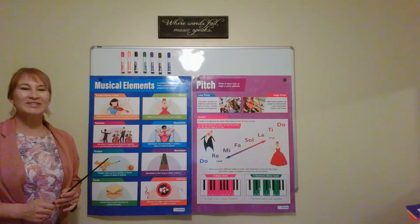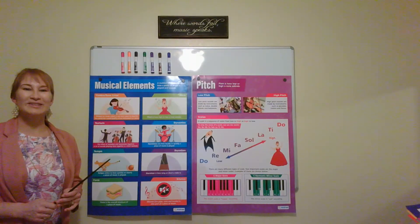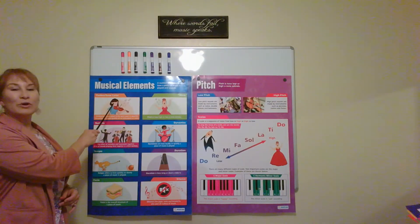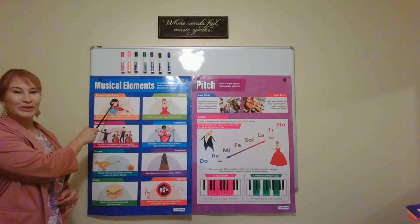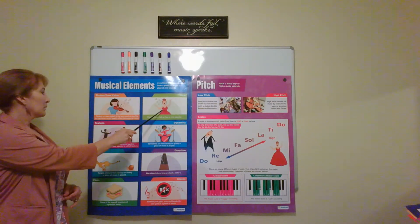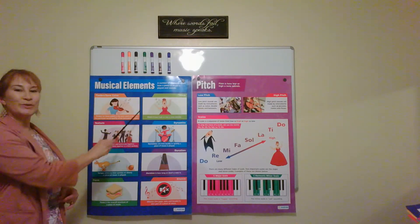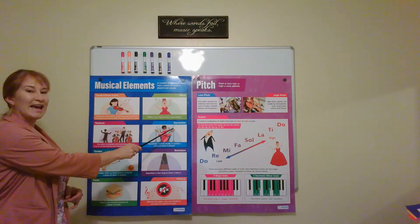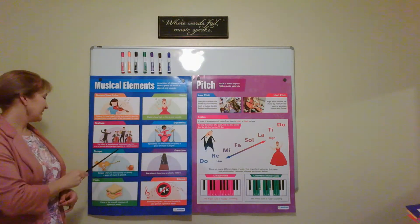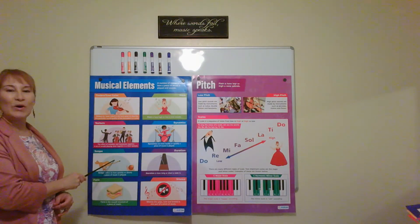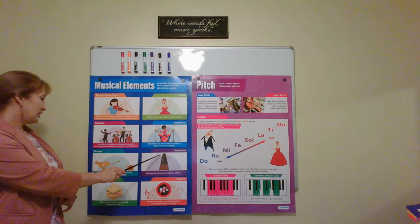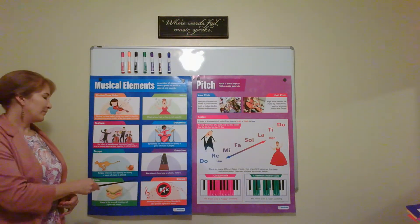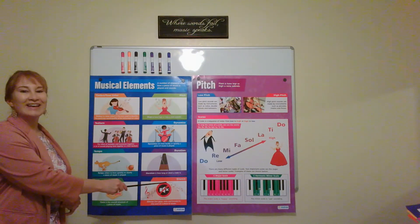The seven elements of music are timbre or tone color, pitch, texture, dynamics, tempo, duration, form, and silence.